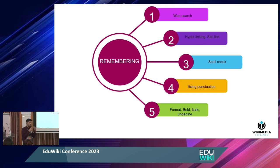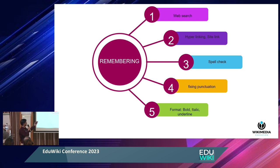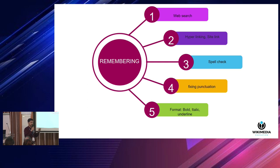Teachers prepare lesson plans based on these domains, and activities are done in the classroom accordingly. At the Remembering level — the very basic knowledge recall stage — we can do activities like searching information in Wikidata or Wikimedia, hyperlinking, connecting site links, checking spelling, or fixing punctuation. These are the very basic editing activities we can do in the classroom.